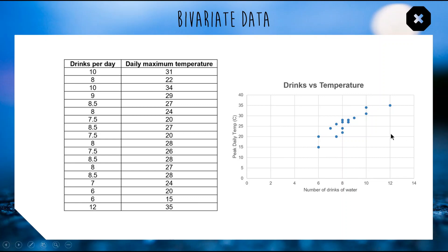This thing that I just called a trend line, in this topic we'll be calling it either a line of best fit or a regression line. It's a line that tries to find the center of your data so you can create a model to make predictions.